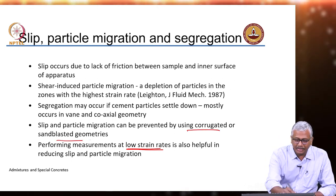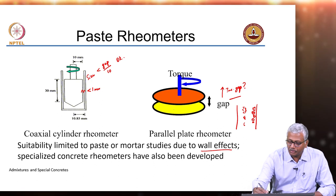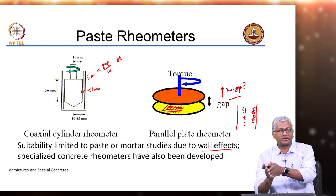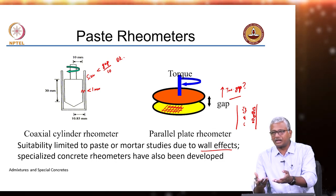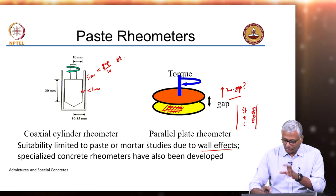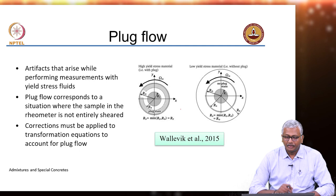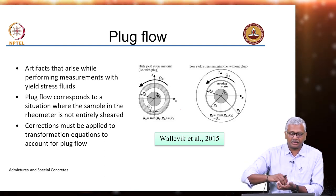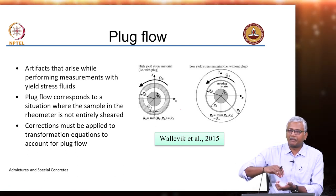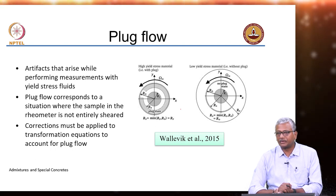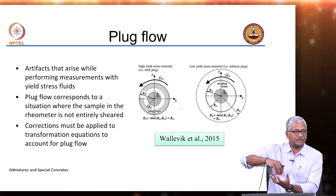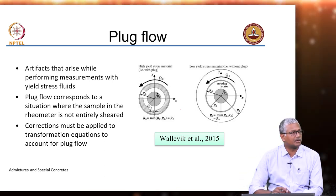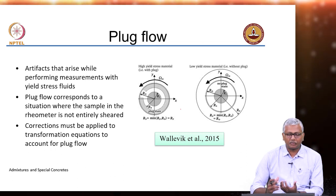One approach to reduce slip is to use corrugated or sandblasted geometry — adding surface corrugations to the plates improves friction with the paste, but requires modifying the standard geometries used for polymers, making rheological measurements more expensive. Plug flow is a particular problem with yield-stress fluids like paste and concrete: the sample does not shear uniformly — the region close to the vane blades shears while the material far from the blades experiences no flow at all.